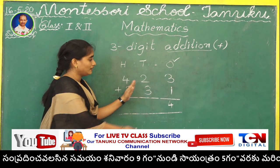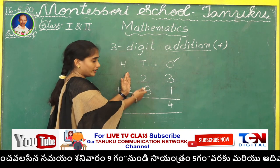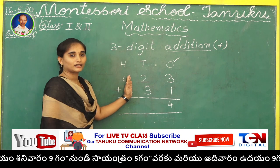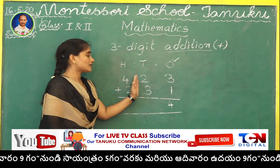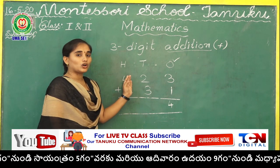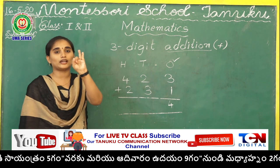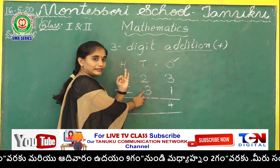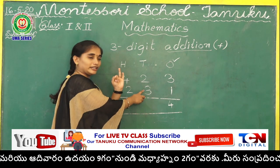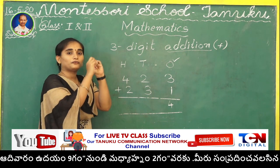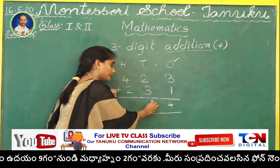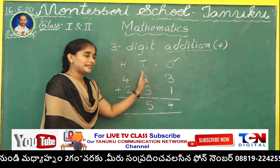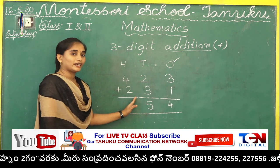See the tens place numbers, children? 2 and 3. 2 plus 3. Now what is the smallest number? 2. So take 2 fingers. Do along with me, children. After 3 — 4, 5. The answer is 5. Ones place completed, tens place completed.